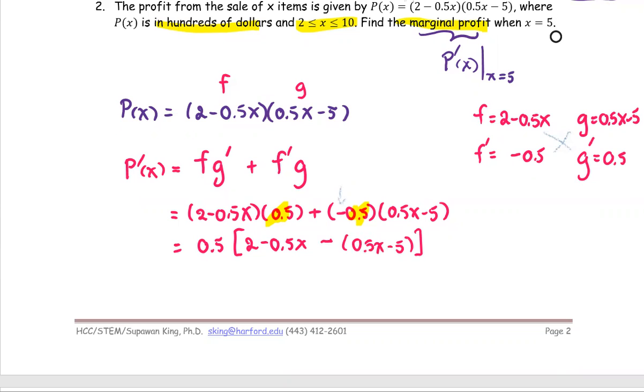To make it convenient, I'm going to write 0.5 as one half and then simplify in the bracket as 2 minus 0.5x minus 0.5x and then plus 5. And the simplified form of the marginal profit, so right here, this is the marginal profit.